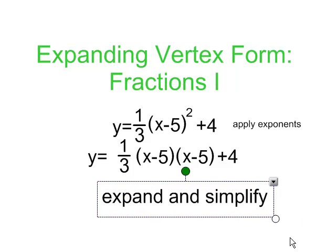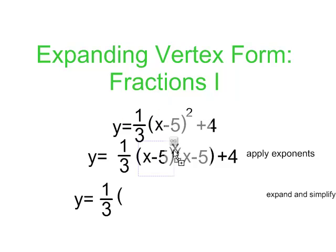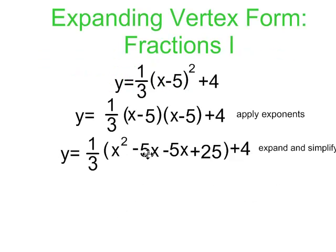Okay, so let's expand and simplify those brackets. y equals one-third, x times x is x squared, x times negative 5, negative 5x, negative 5 times x, negative 5x, and negative 5 times negative 5 is positive 25, plus 4. Now, negative 5x minus 5x, I can simplify a little further, like terms. x squared minus 10x plus 25, all multiplied by one-third plus 4.